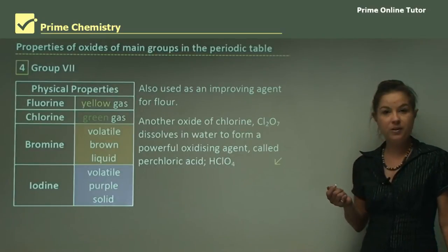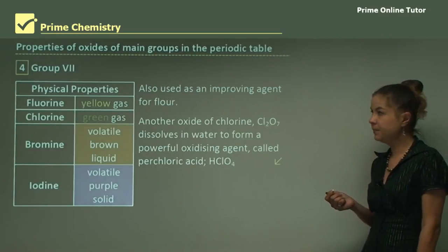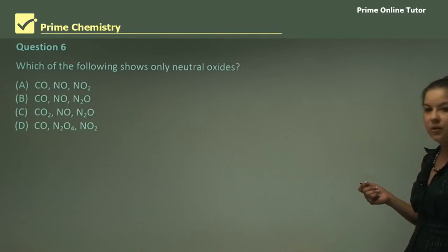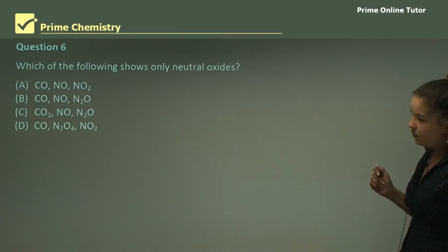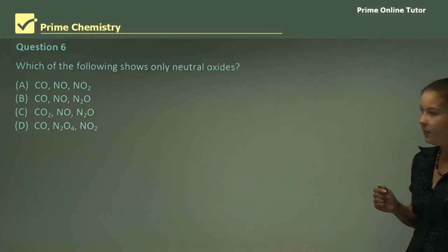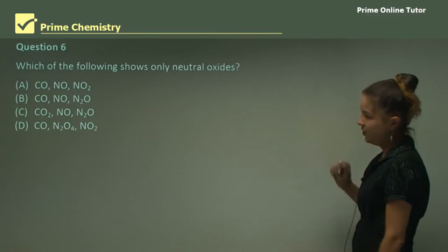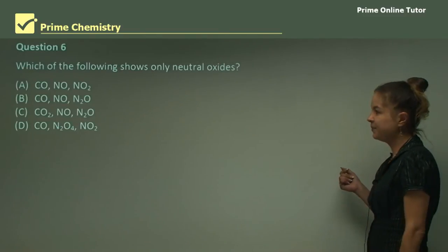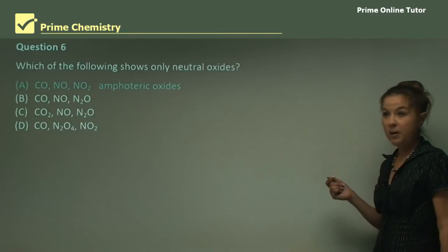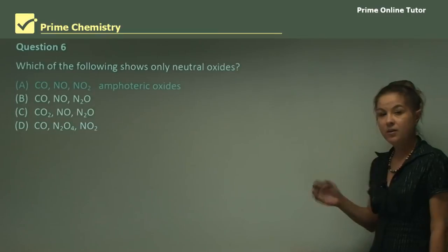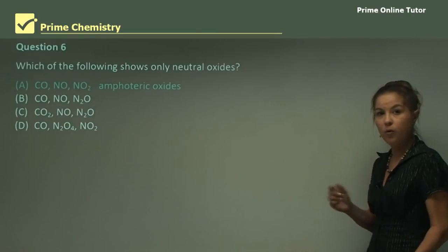Question 6: Which of the following shows only neutral oxides? We have a few options there. To the untrained eye they may all look the same because there's a lot of C's, O's, and N's, but you have to look specifically at how many of each there are to get the right answer. Part A: CO, NO, and NO2 are all amphoteric oxides, so they can act as an acid or a base.